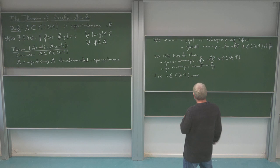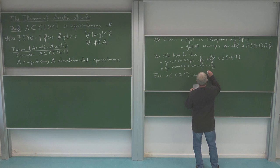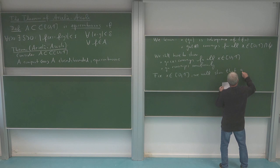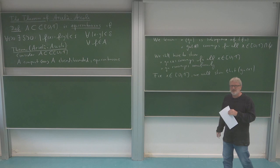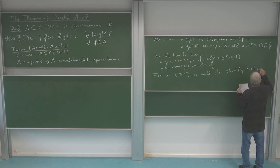Our Banach space is complete, so showing convergence can usually be done by checking the Cauchy property. Actually, this is not about our Banach space - this is just about real numbers because GN of x is just a sequence of real numbers, and of course R is complete. So we will show that GN of x is a Cauchy sequence.